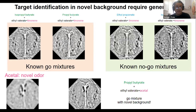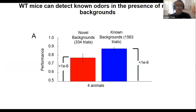We make it even harder by replacing limonene with the novel odor acetol — now the animal must classify mixtures that are very confusable. Mice, being olfactory experts, solve this task at 77% accuracy, not as well as with the known background, but still well above the 50% chance level.